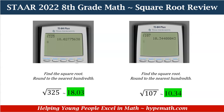Now let's look at the square root of 107. The square root of 107 is 10 and 34 hundredths. To figure out our hundredths place rounding, we look at our thousandths place. In our thousandths place there is a 4. Because that number is less than 5, our 4 stays the same. Our answer for the square root of 107 is 10 and 34 hundredths.